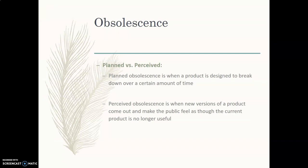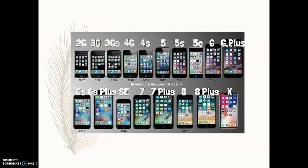Obsolescence — we have two different kinds. Planned obsolescence is when a product is designed to break down over a certain period of time. Your shoe is going to wear out, so you have to buy new shoes because it is now obsolete and no longer keeps your feet dry. Perceived obsolescence is when new versions of a product come out and make the public feel as though the current product is no longer useful. You might need a new iPhone because the latest model has come out and now your current one is no longer good enough. Notice they're releasing them almost every year with minimal changes, but people still want that new version — and that's done via marketing.